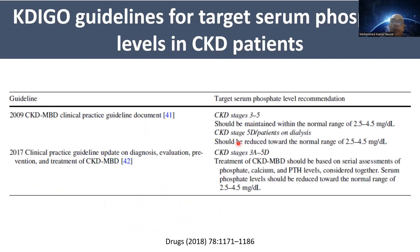The CKD guidelines recommend maintaining the phosphate level towards the normal range of 2.5 to 4.5 mg/dL. This is the latest recommendation of the CKD guidelines.